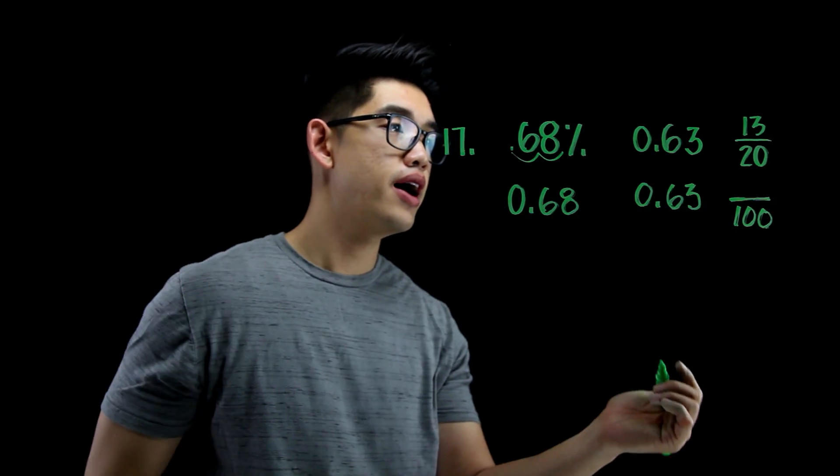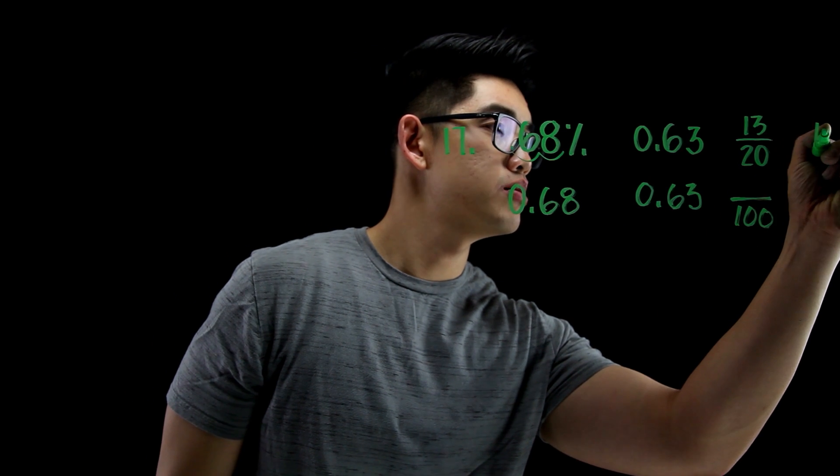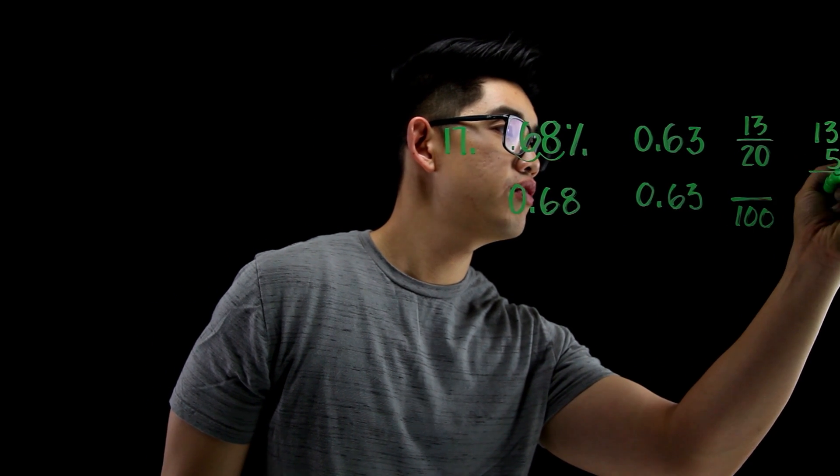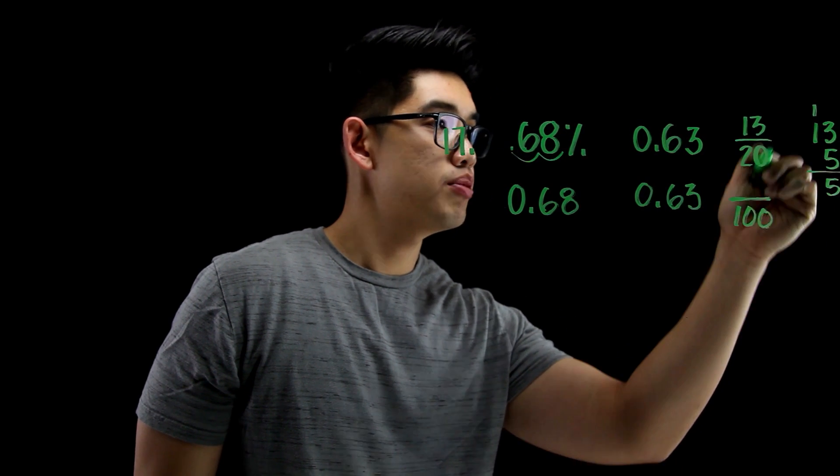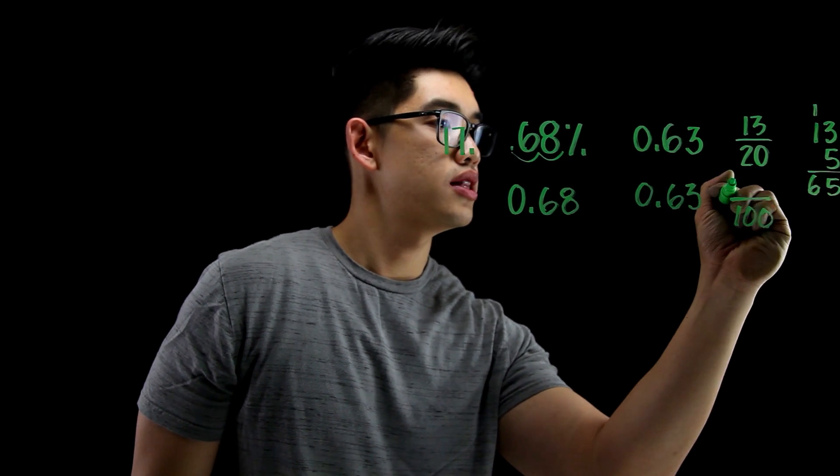So, 13 times 5. Let me see, what's 13 times 5? 5 times 3, that's 15. 5 times 1, that's 5. Plus 1, that's 6. So, I can say that this is 65.